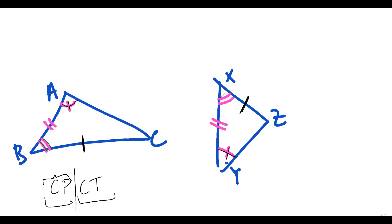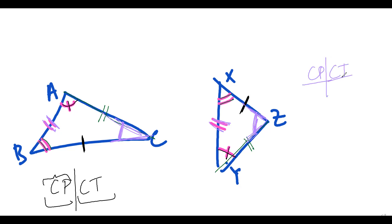This angle is equal to this angle. This side is opposite to this angle and this side is opposite to this angle, therefore YZ would be equal to AC. This side is equal to this side — this angle is opposite to this and this angle is opposite to this, therefore this angle would be equal to this. Have you understood the meaning of CPCT?